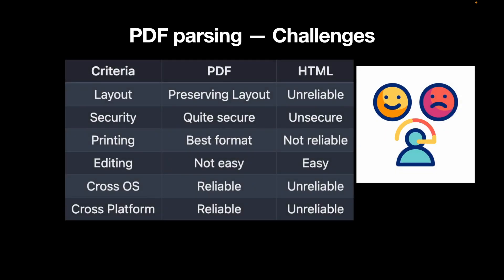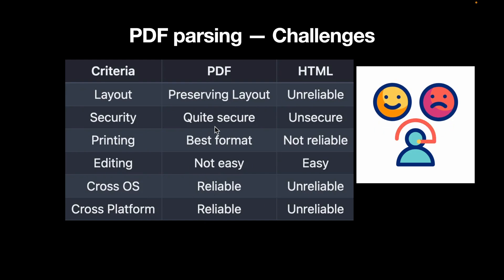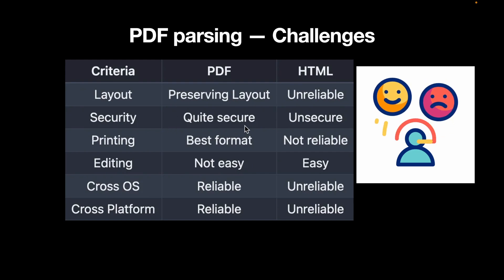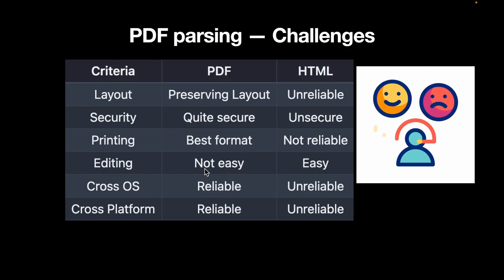So why do we even need PDFs if they are so challenging? It turns out that PDFs bring in quite a few good properties, such as preserving the layout. They are also quite secure — we've come across PDF documents that can be secured with a password. PDFs are the best format for printing because they preserve the layout, and editing is not easy. Whenever you want to circulate information that should not be edited and you want to preserve the content, you will probably be using PDF.